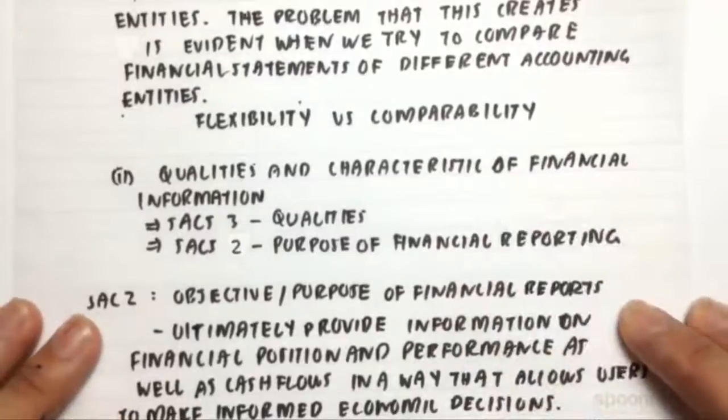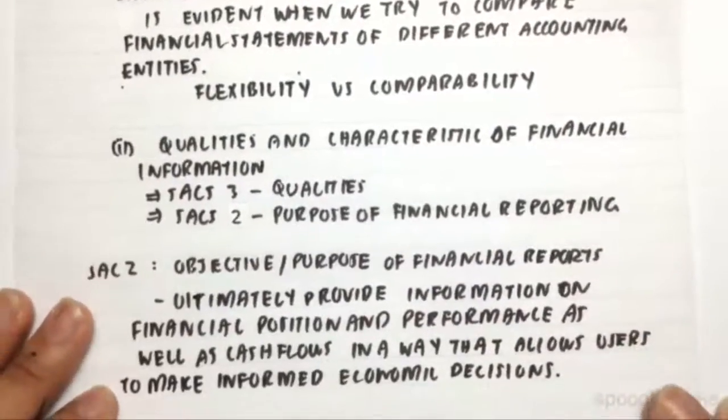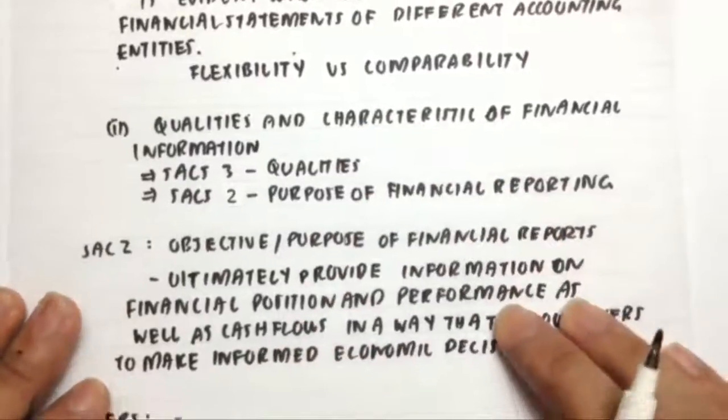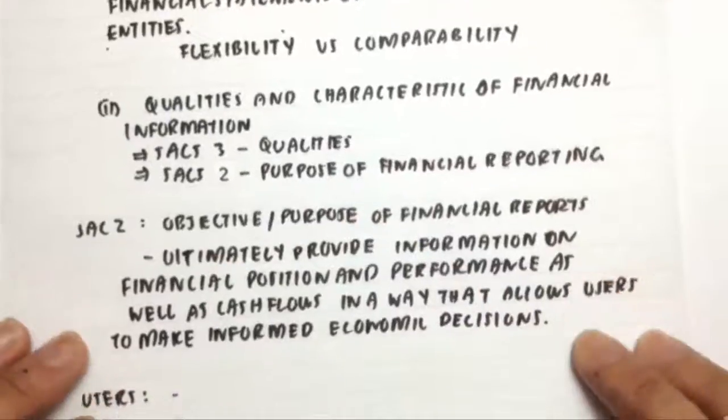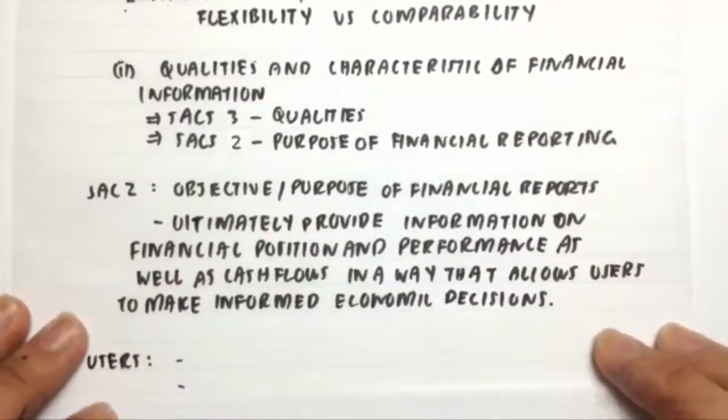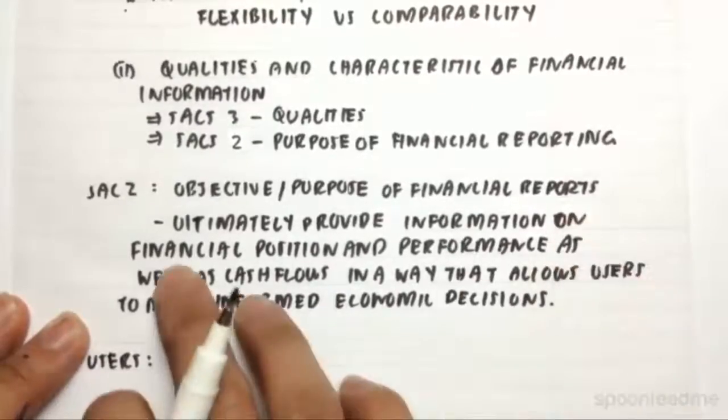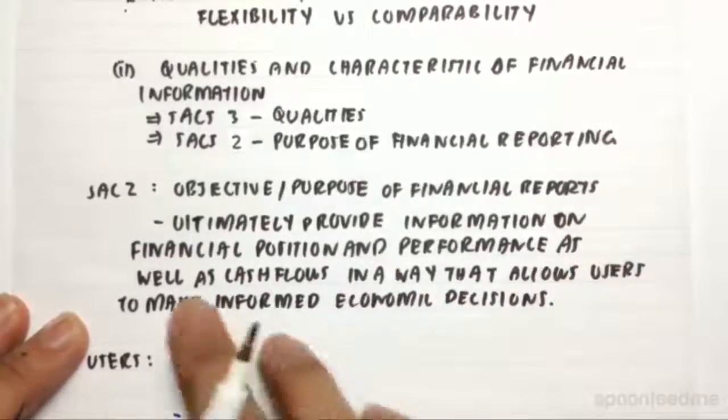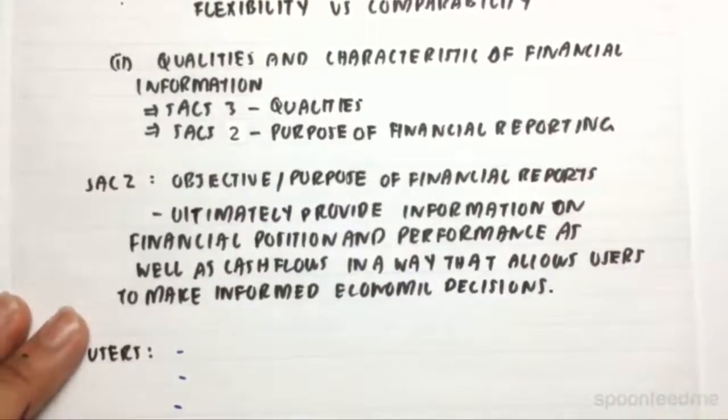So the qualities and characteristics of financial information is going to be objective number 2. So that's SACs 3 and 2, the qualities and the purpose of financial reporting. So SAC 2, its ultimate objective is to provide information about the financial position and performance as well as cash flows in a way that allows users to make informed economic decisions.